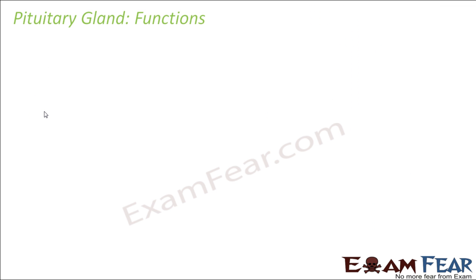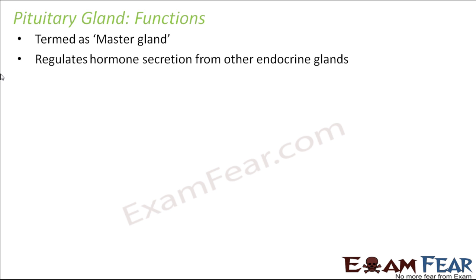Now let us look at the functions of the pituitary gland. The function of any endocrine gland is to secrete hormones that play an important role in the functioning of our body. The major function of the pituitary gland lies in the fact that it acts as the master gland — it controls the function of all other glands by regulating hormone secretion from other endocrine glands.